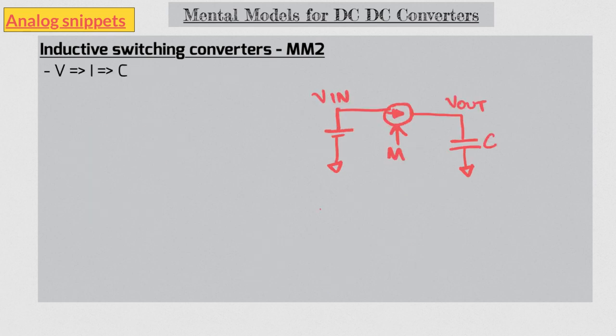An inductive switching converter can be thought of as a controlled current source charging a capacitor. Notice that in this form it looks pretty similar to an LDO. But in place of a controlled current source we have a controlled resistor. In fact, this lossy resistor is what makes the LDO so inefficient.